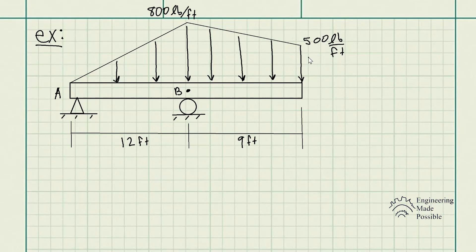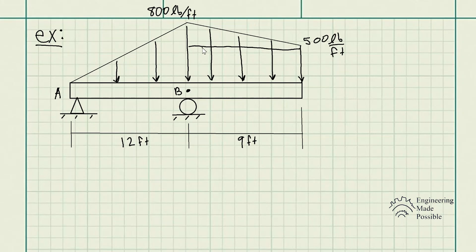Since we already know the areas for triangles and rectangles, we can split the loading into its respective geometries. We have a triangle on the left-hand side, and on the right-hand side we have a rectangle with a triangle on top. The first step is to simplify it to make it easier to solve for the resultant force. Once you identify each geometry within this distributed loading, you can solve for each individual resultant.